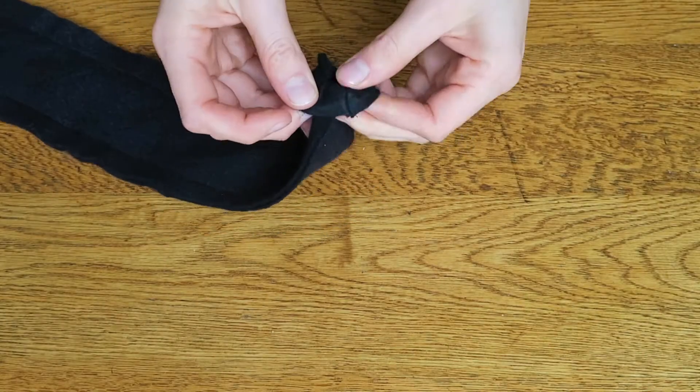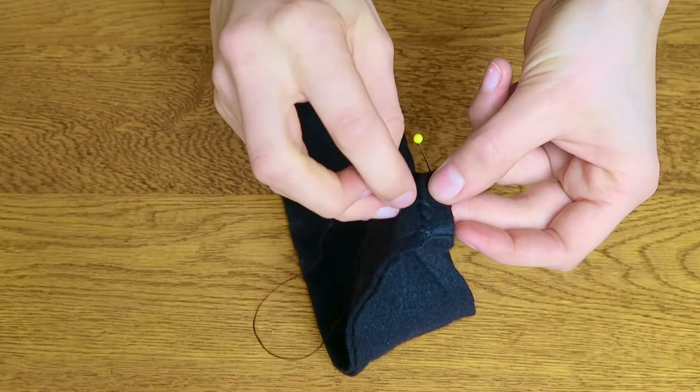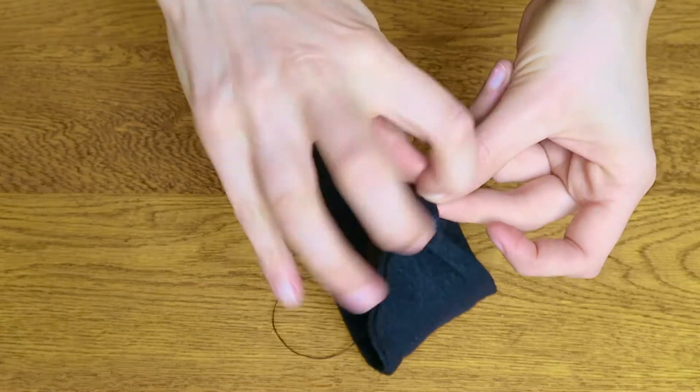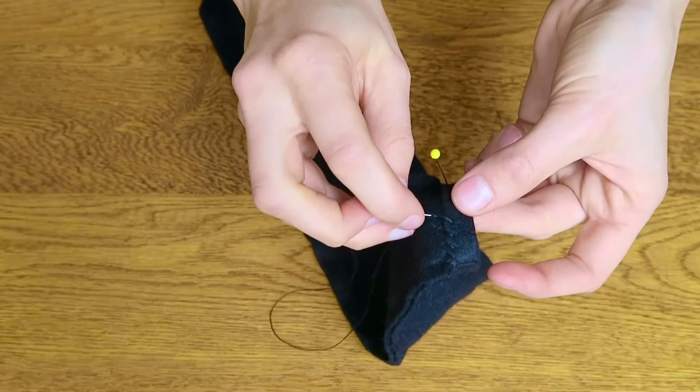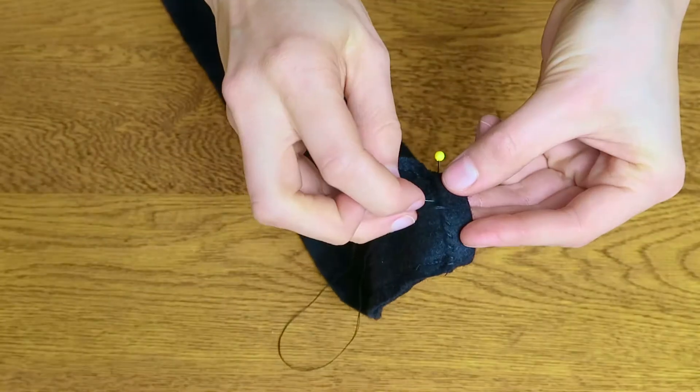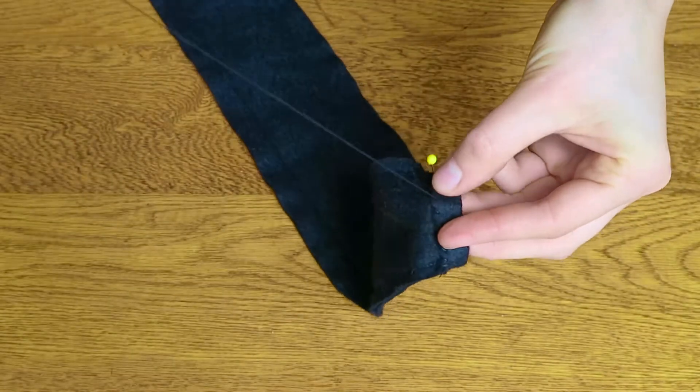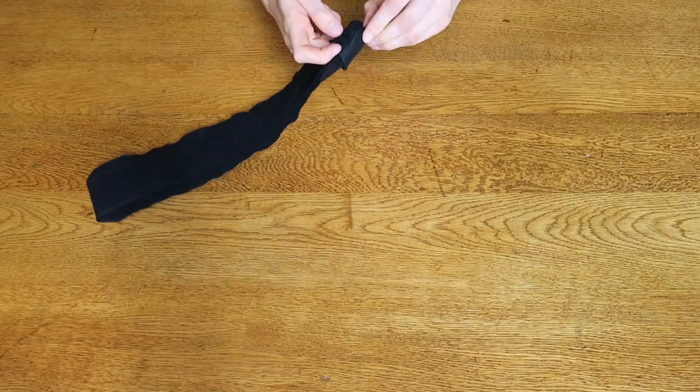Fold over the top open edge one centimeter. Pin and hand stitch in place. Turn the pouch right way out.